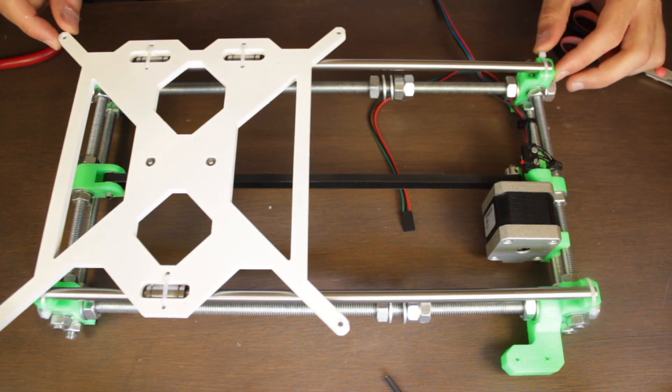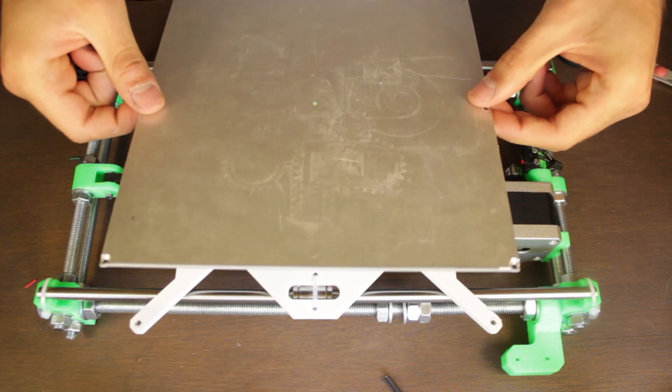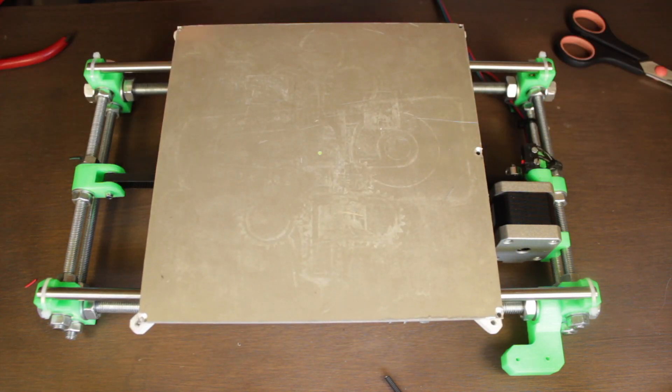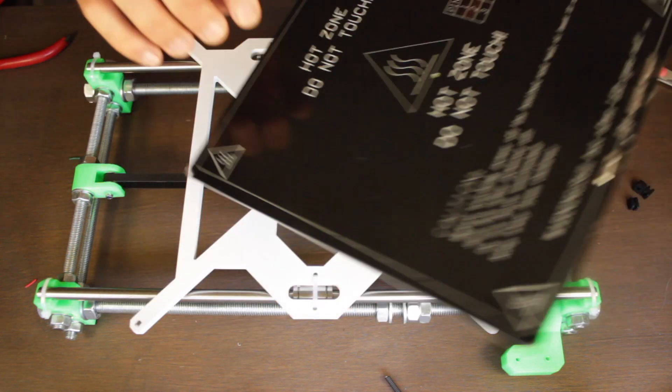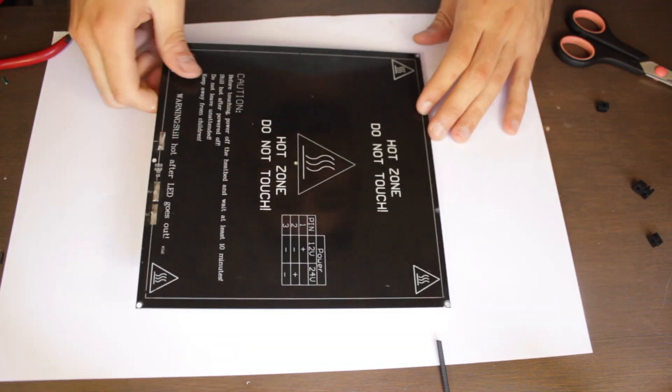To start we'll need the complete Y-axis structure with all the components we installed last week. First we're going to install the heated bed itself using 4 spacers, one for each corner. It will go upside down as you can see here, but before we're going to work on it a little bit, so we'll put away the Y structure and put some paper to protect our desk.